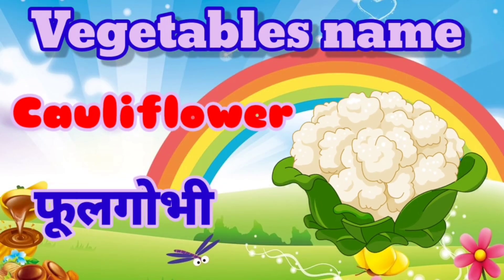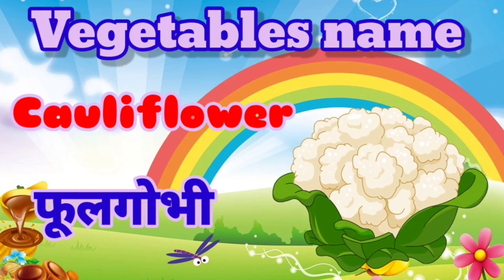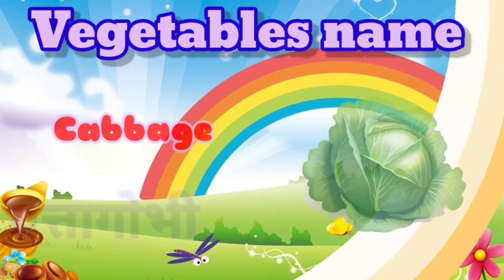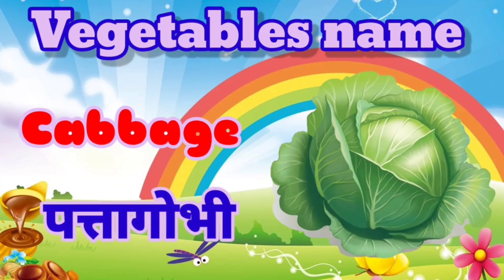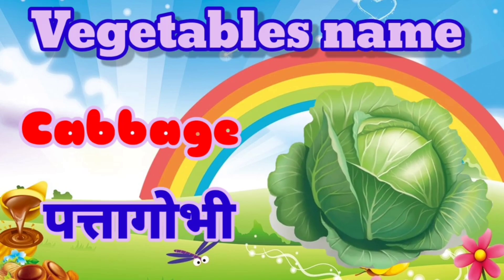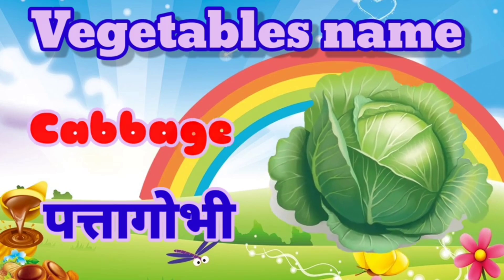Cauliflower. Cauliflower means Phool Gobi. Cabbage. Cabbage means Patta Gobi.